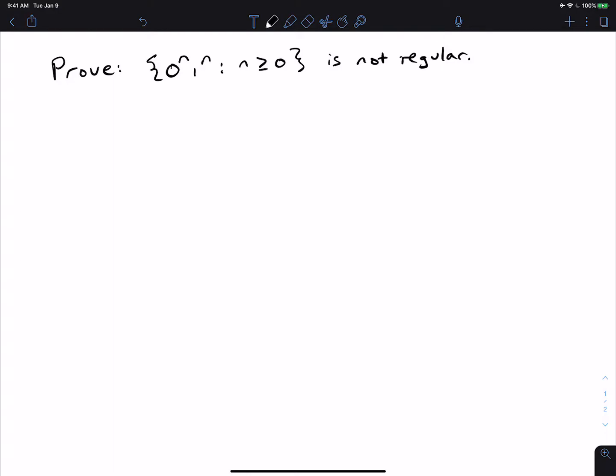All right, let's do some theory for fun. So today we're going to prove that this language, zero to the n, one to the n, where n is at least zero, is not regular. And we'll try to prove it as easily as possible.